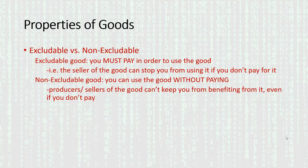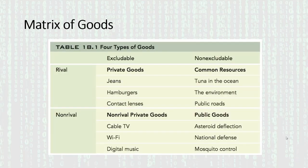Given that we have two dimensions along which goods can fall on either end of the spectrum, 2 times 2 is 4, meaning we wind up with four kinds of goods. We create a 2x2 matrix to think about different kinds of goods based on whether they are rival or non-rival.